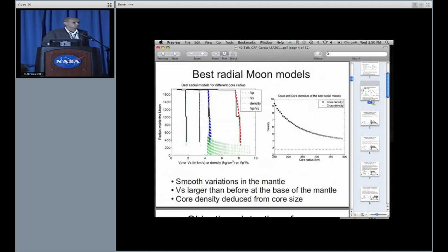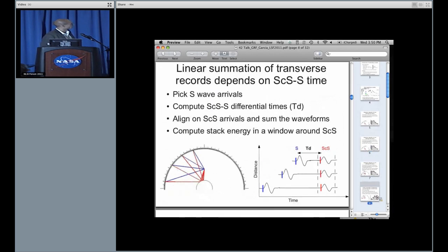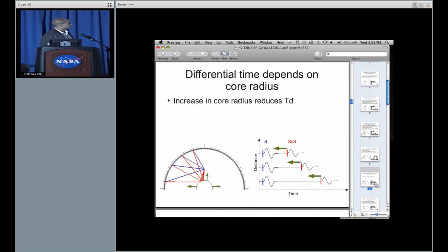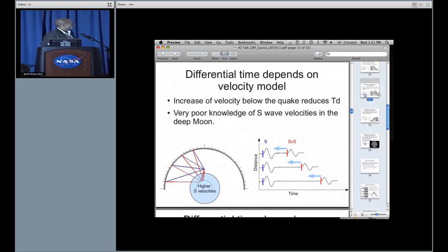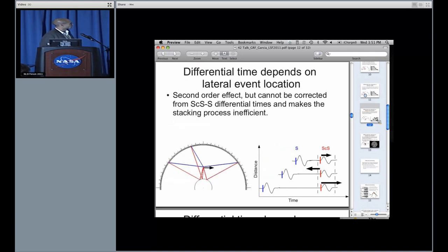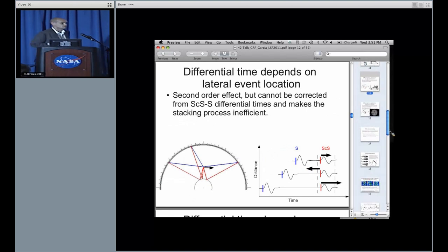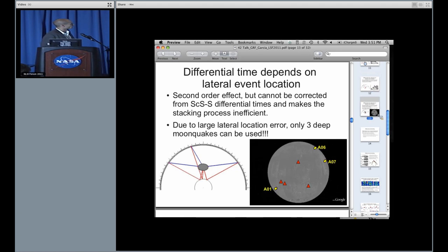But it also depends on the depth of the event, which is poorly known because we locate the event with only four stations, so we have to investigate this parameter also in the stacking process. But it also depends on the S velocity profile at the base of the mantle, which is also poorly known because we have a low number of measurements of S waves at large epicentral distances. Finally, it depends also on the lateral location of the quake, and this is a second-order effect, but this may destroy the interference of the core reflected phase. So what we are able to demonstrate is that due to the large lateral location errors, only three deep moonquakes can be used.